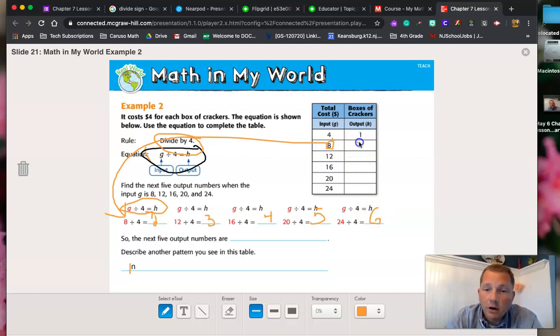So my missing numbers here are 2, 3, 4, 5, and 6. Now, the very last thing that asks in this problem is to describe the pattern that you see in this table. I tried typing it, but it got all messed up. So I'm just going to say it out loud and then I'll show you the answer.